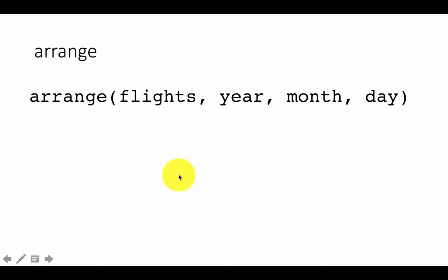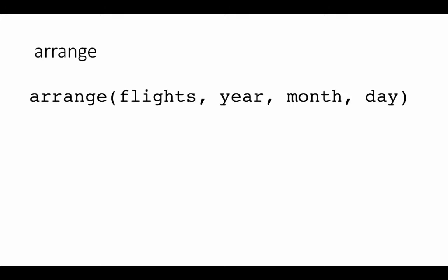Let's look at the function called arrange. The arrange function is used to order the data — the input data frame rows might be in any order, but with arrange you can control the ordering. For example, suppose we say arrange(flights) — flights is our data frame from the NYC flights 2013 dataset containing all the flight details for flights that left New York City in 2013. Here we say arrange flights by year, month, and day, which means arrange primarily by year, then within year by month, and within month by day.